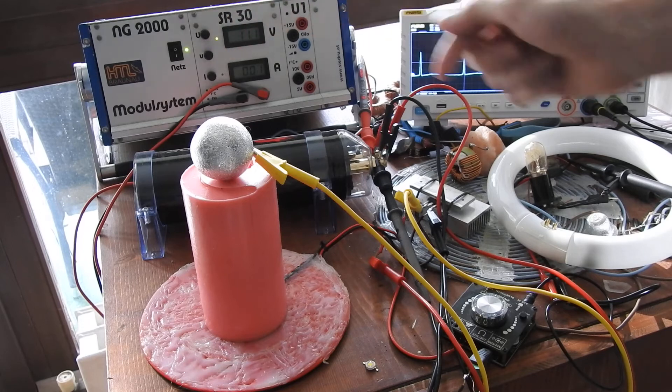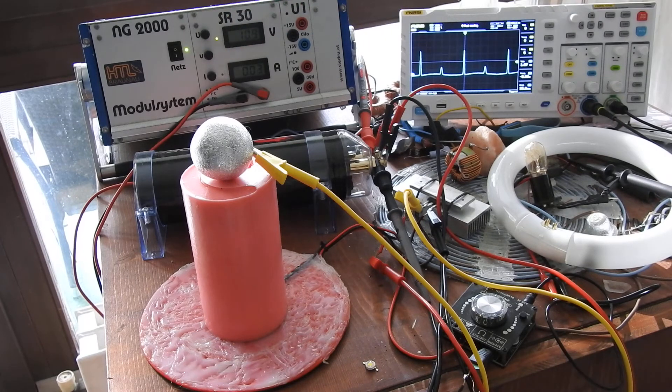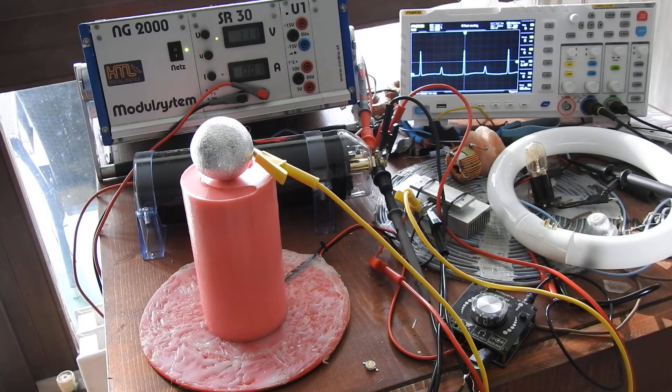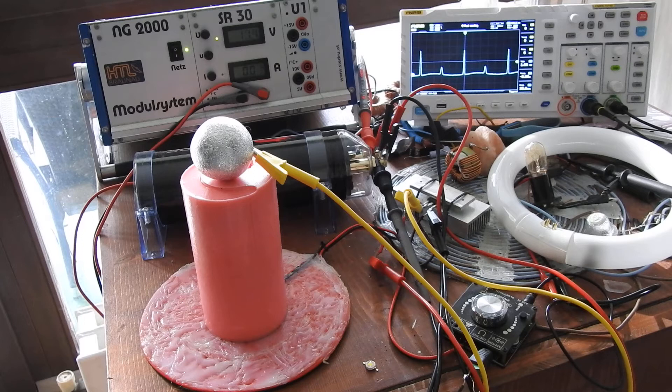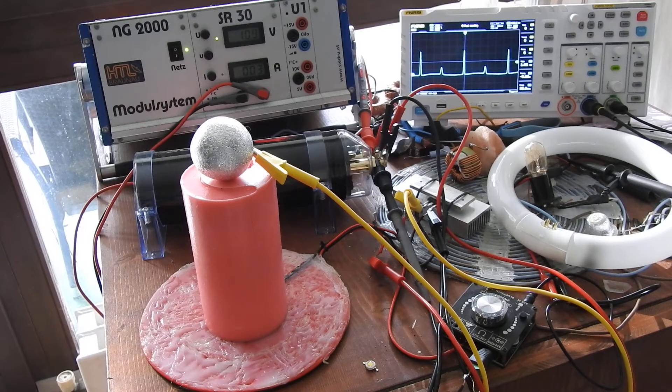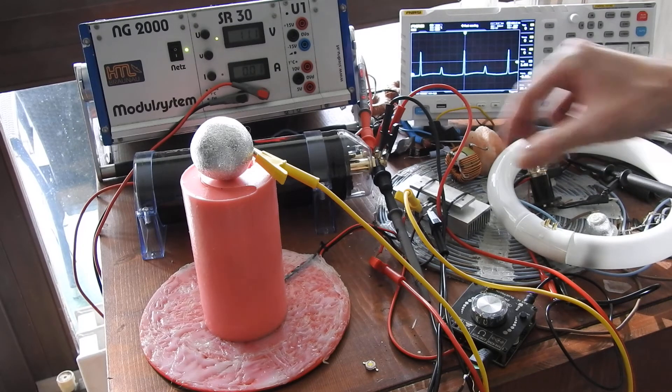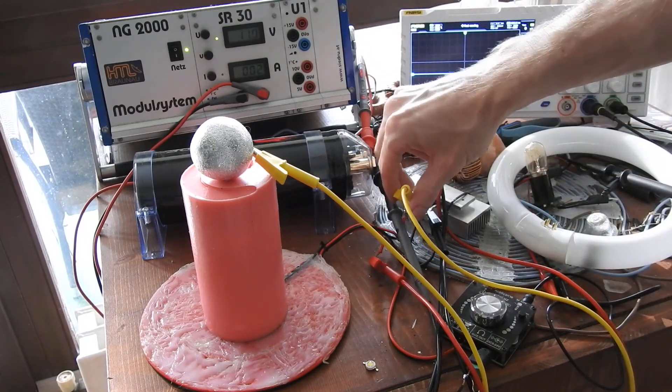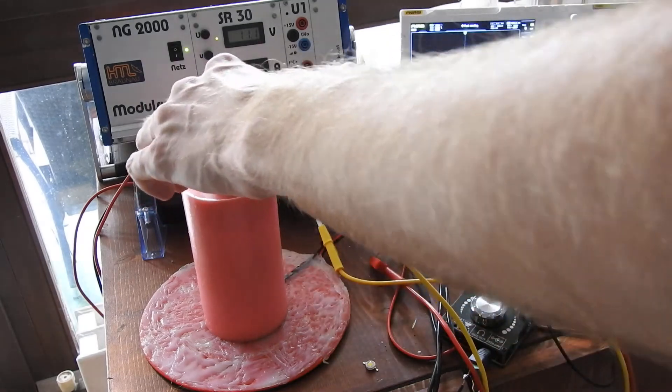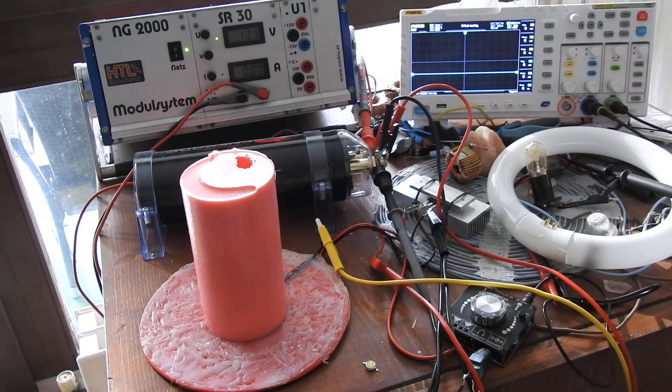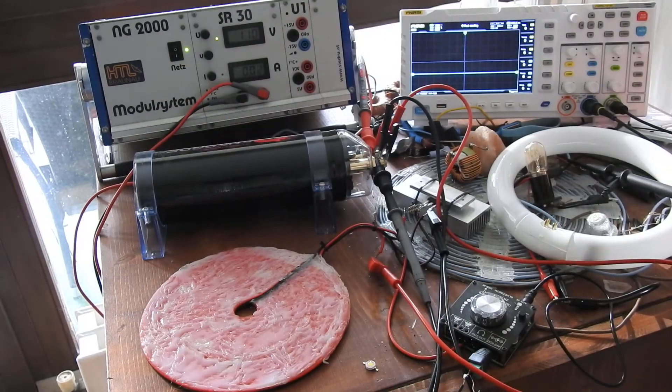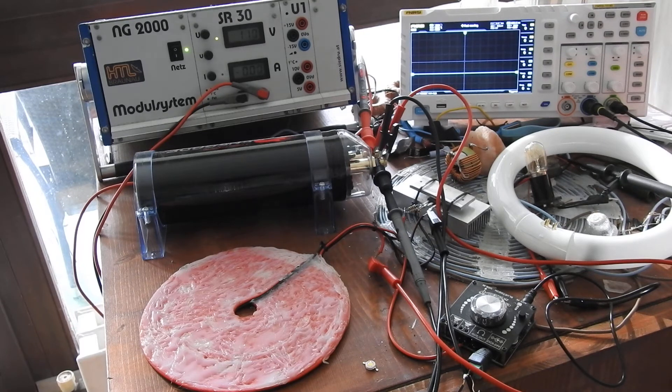So what I'm going to do next is I will power some LEDs with it. For this I'm going to remove this metal sphere first. Let me turn off the signal generator so it's safe to touch. So I've disconnected the metal sphere as an antenna.